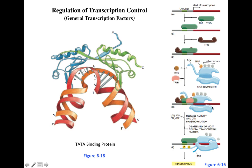After all general transcription factors are bound to the promoter and RNA polymerase has been recruited, transcription factor 2H plays a special role. It has two unique functions. First, it has intrinsic helicase activity: after TATA binding protein untwists the DNA, TF2H rips the DNA apart to expose the template strand to RNA polymerase, cleaving the bonds so the template strand is accessible.